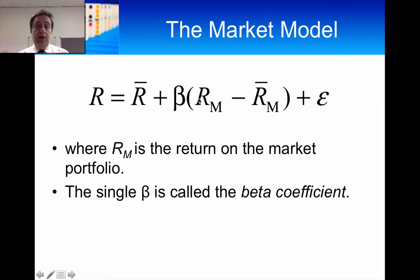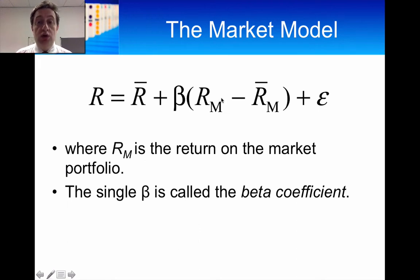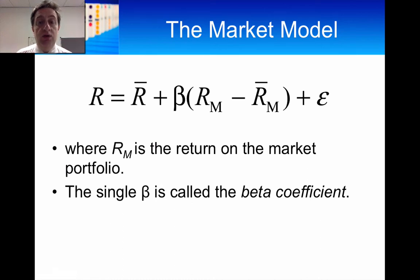In the example I'll use, I'm going to use a one-factor model. An example of a one-factor model is the market model. The return on a security equals the expected return plus the one factor — in this case the return on the market — looking only at the difference between what you expect the market return to be and what it actually is, plus the unsystematic component. That's a one-factor model.